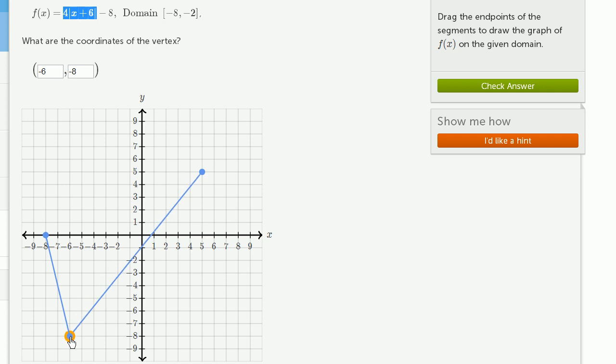And then let's think about what happens at the other boundary. When x is negative 2, negative 2 plus 6 is 4. The absolute value of 4 is 4. 4 times 4 is going to be 16 minus 8 is 8. So it's going to be the point negative 2, 8.